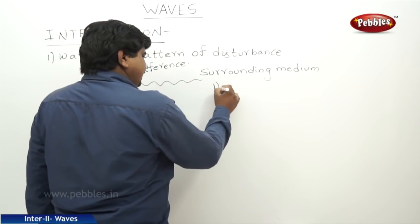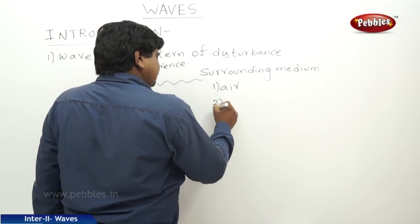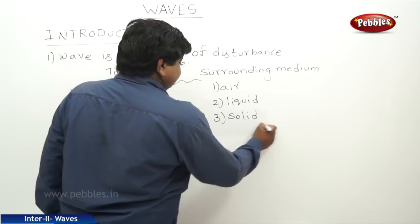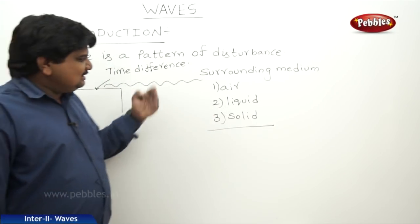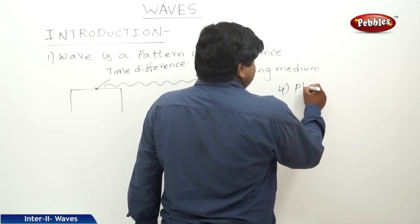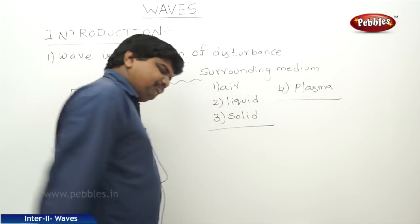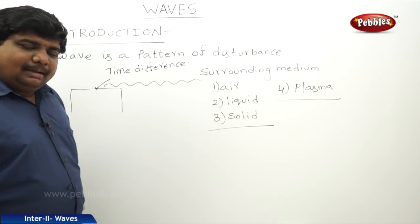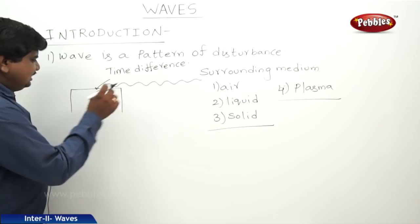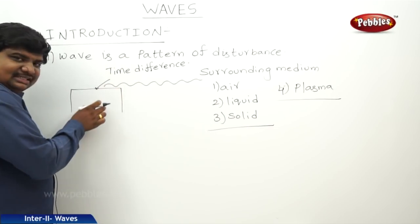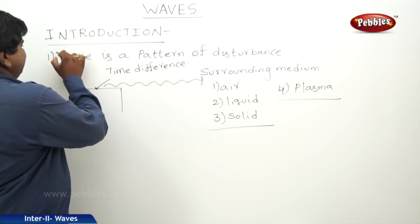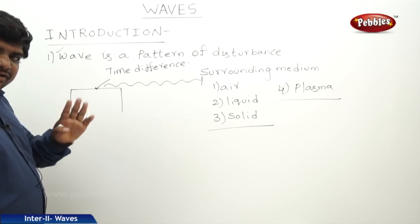The surrounding medium may be air, liquid, or solid. Other media also exist, such as plasma, but plasma is not a suitable medium to transfer sound or a wave. The complete pattern of disturbance traveling from one point to another point in a regular interval is called a wave. These waves are classified into four types.